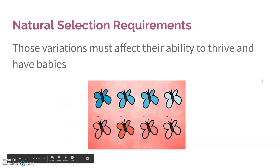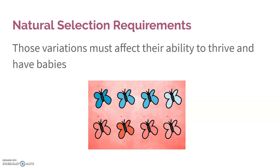And four, these variations have to affect their ability to thrive and have babies. In order for something to become advantageous, it has to be something that allowed it to survive long enough to have babies. If it has done that, it passes on that gene, and that gene increases in allele frequency in future generations. That is natural selection.